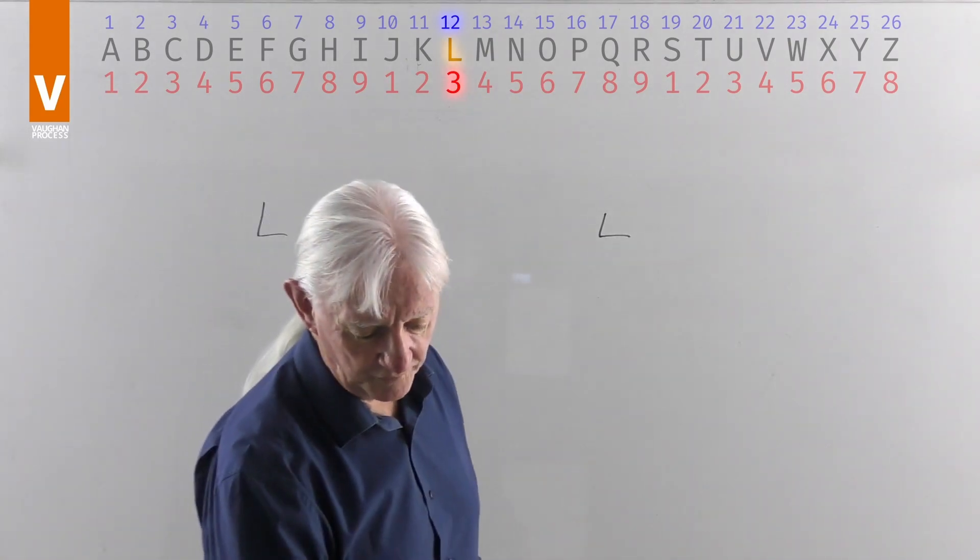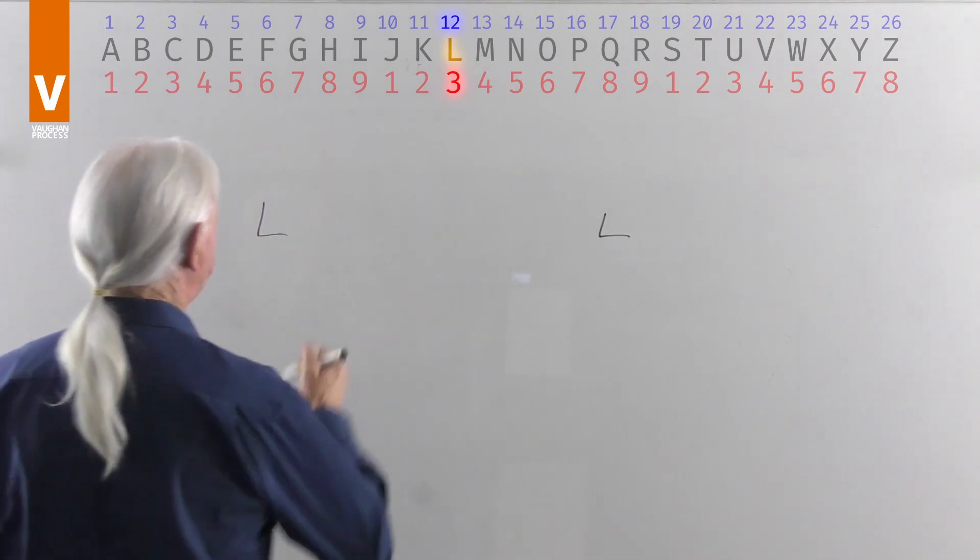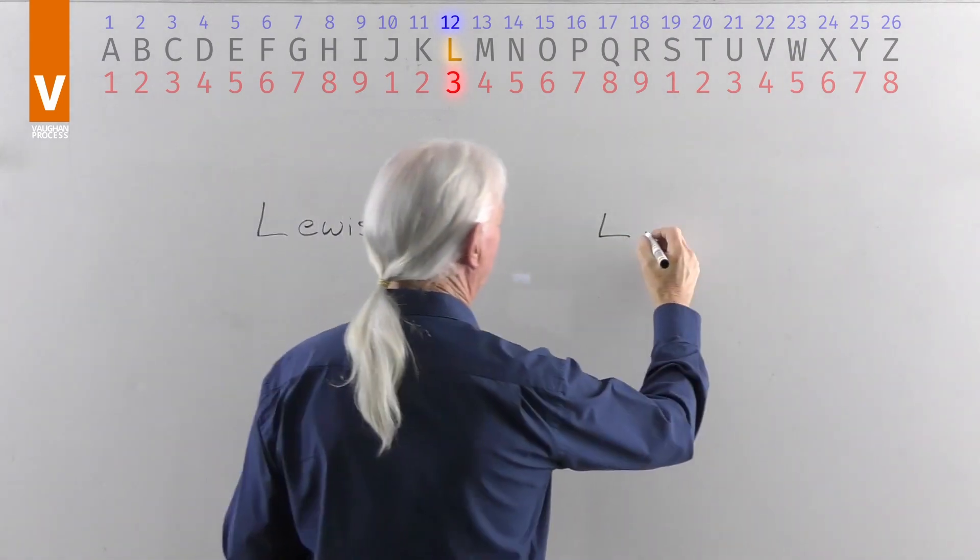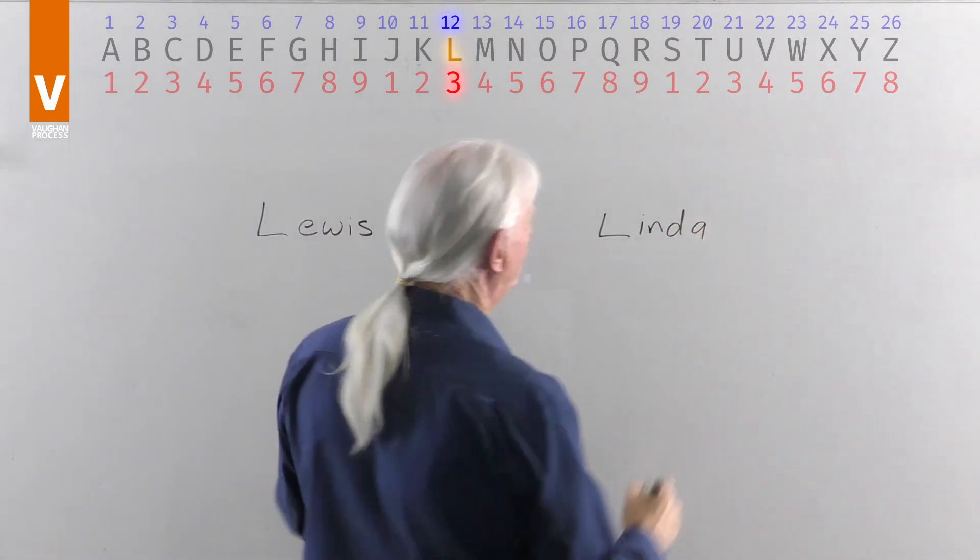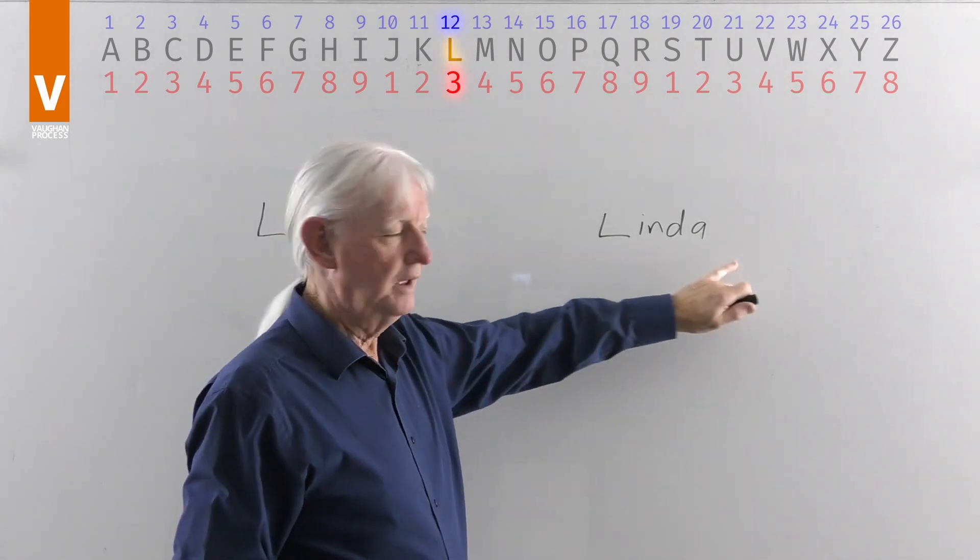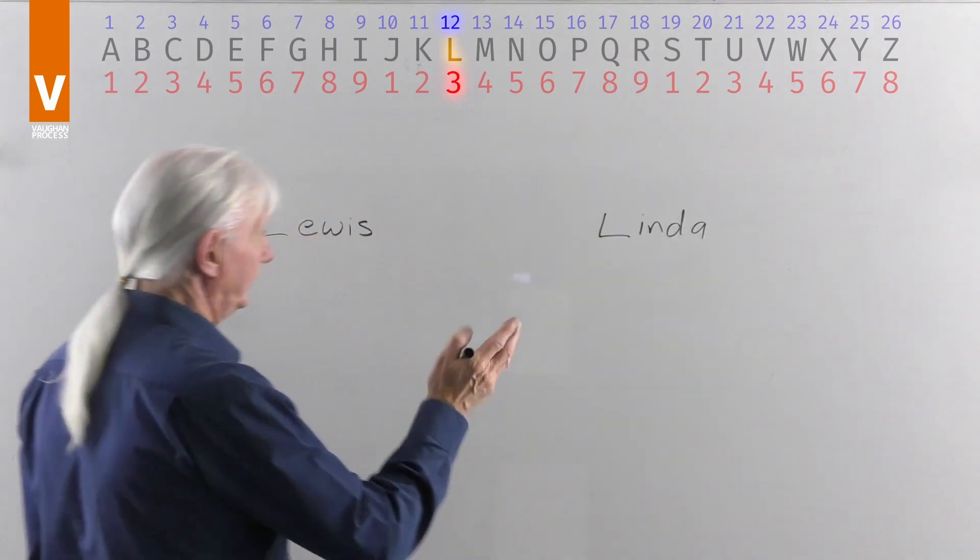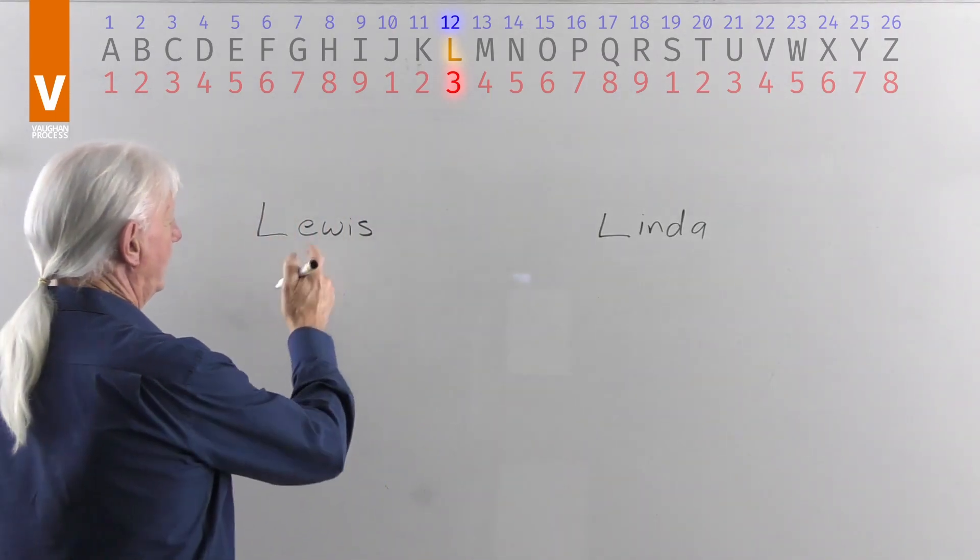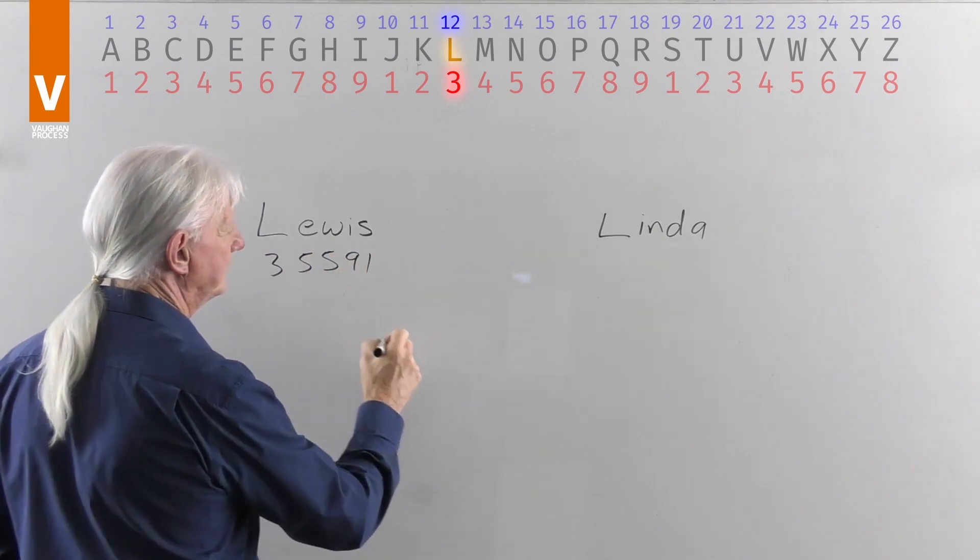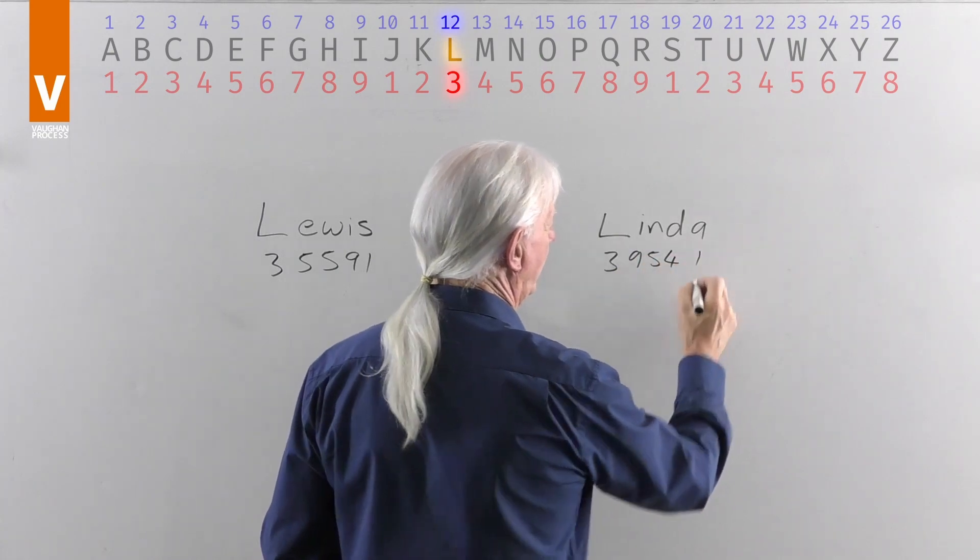So with L, I've written down here, I'm going to choose Lewis and Linda. Now, you can spell Linda with an I, have an E-R. I've got all sorts of ways that I've seen Linda spelt, but they sound the same. And here with Lewis, I'm going to put three, five, five, nine, and one. Three, nine, five, four, and one.